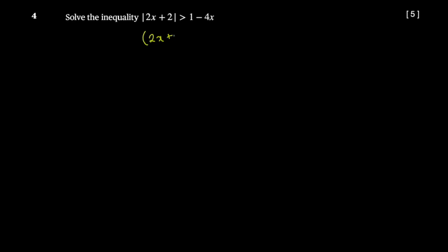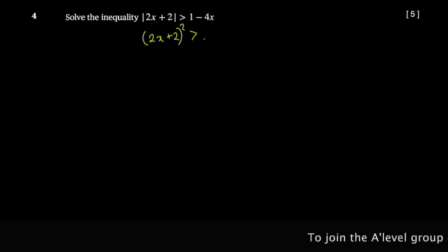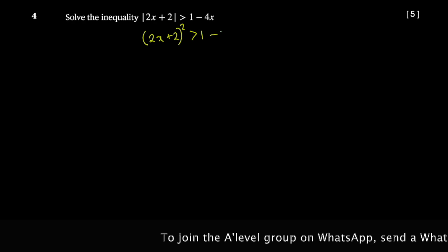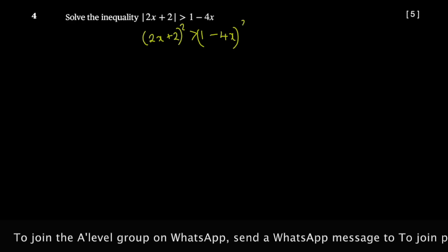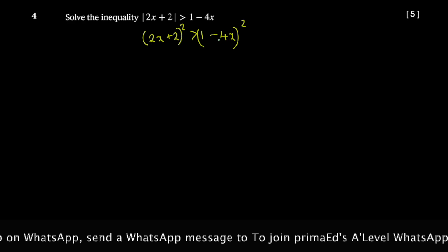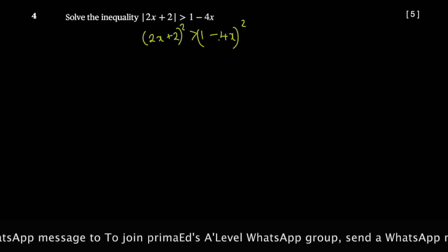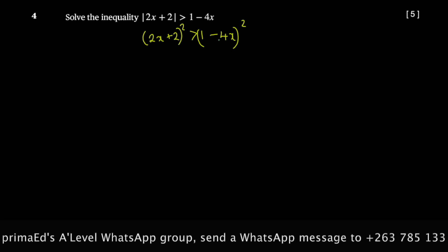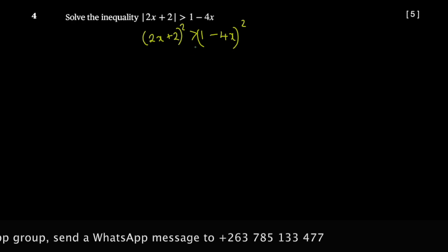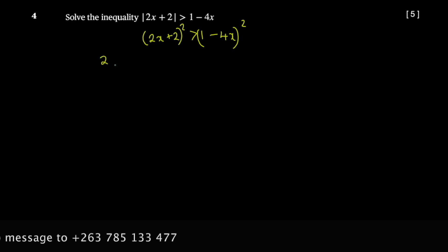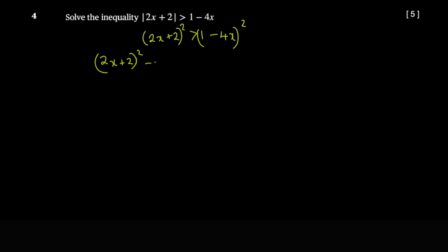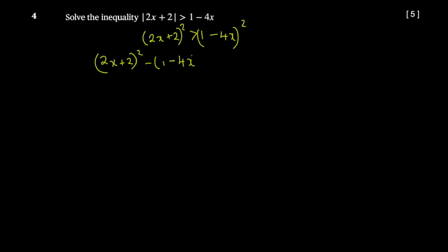What you do is square both sides first. You get (2x + 2) squared on the left. Squaring is how you get rid of the modulus. When you square both sides of an inequality, you don't change the inequality. A smart way to proceed is to use the difference of two squares rather than expanding — kick one term to the other side so you have a square on each side.